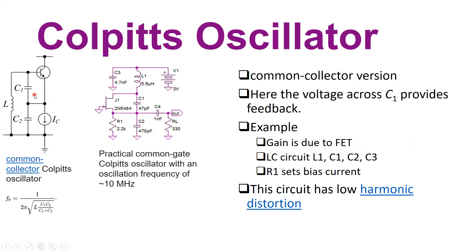Here is another version in which the BJT is biased in common collector mode. The collector is common between base and emitter; the input is applied across the base-collector junction and the output is from collector to emitter. A collector current source IC acts as a constant current source to set the operating point. The combination of L, C1, and C2 acts as a tuned circuit. The output voltage is sensed at the emitter, and through voltage division across C1, the base-emitter voltage is applied as feedback input to the transistor. The frequency of oscillation is given by the same formula as before.